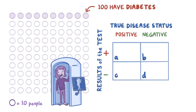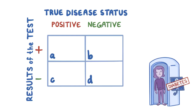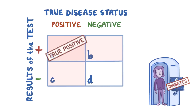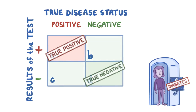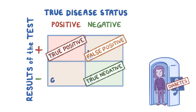In this situation, a positive test indicates that a person has diabetes. A person who gets a positive test result and has positive disease status — so has diabetes — is called a true positive. A person who gets a negative test result and a negative disease status — so does not have diabetes — would be a true negative. A person who gets a positive test result even though they don't have diabetes would be a false positive. And lastly, a person who gets a negative test result even though they have diabetes would be a false negative.